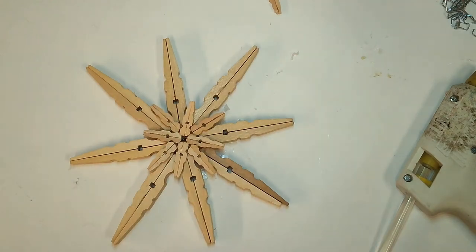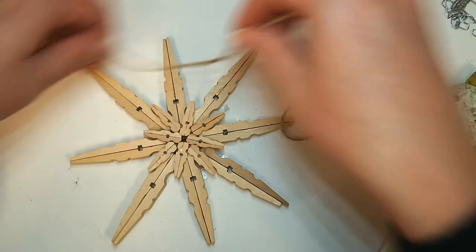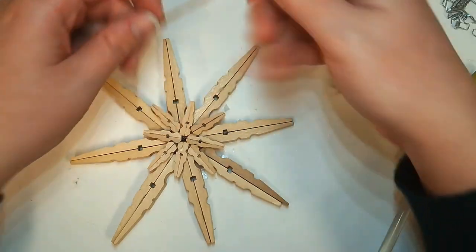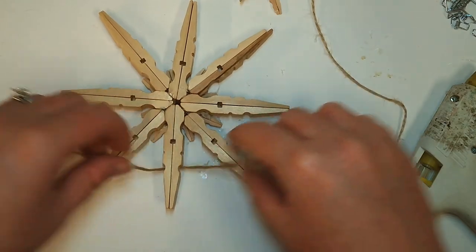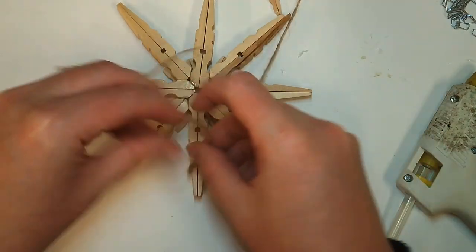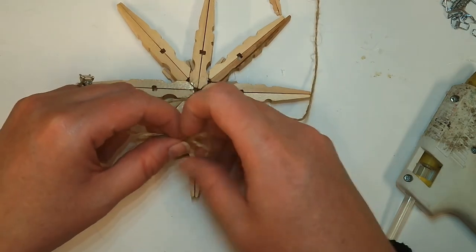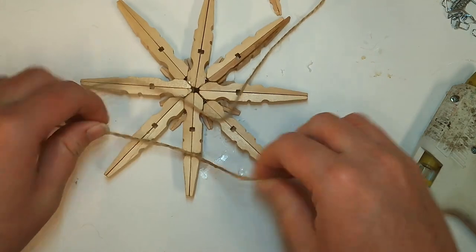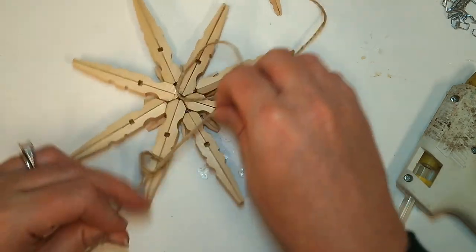Once your spoke is dry, go ahead and take your twine and you're going to put this upside down. Find a groove right here at the top and tie a nice tighter knot right there. I always go ahead and double knot it. Keep that in place.